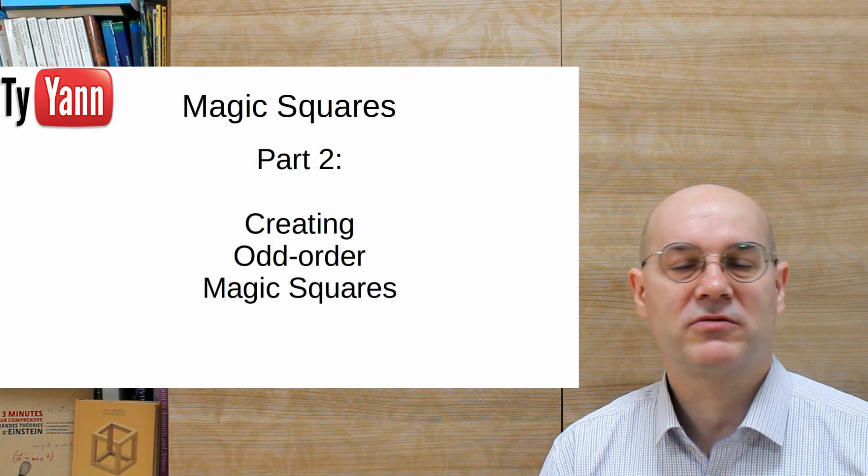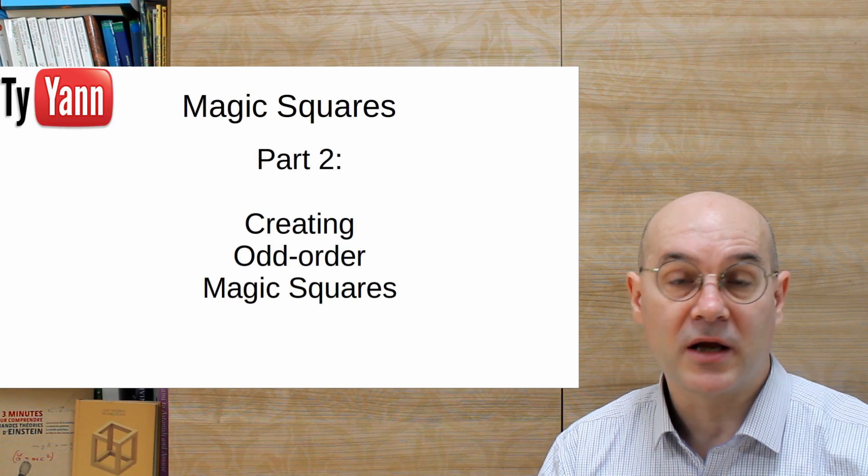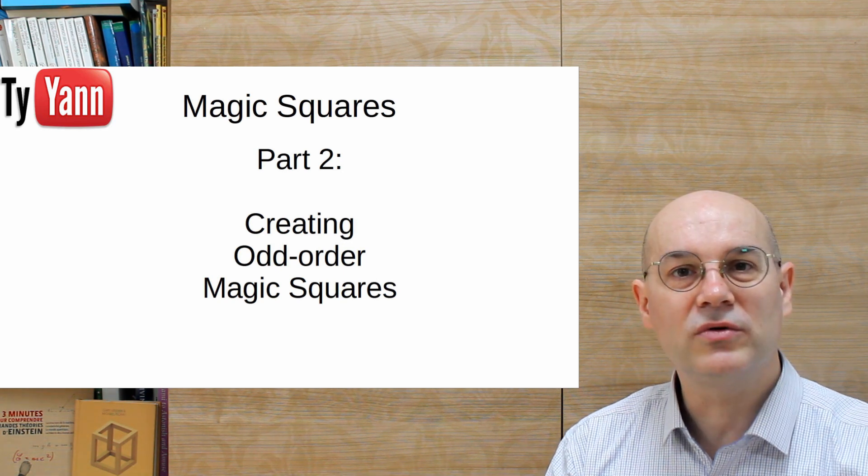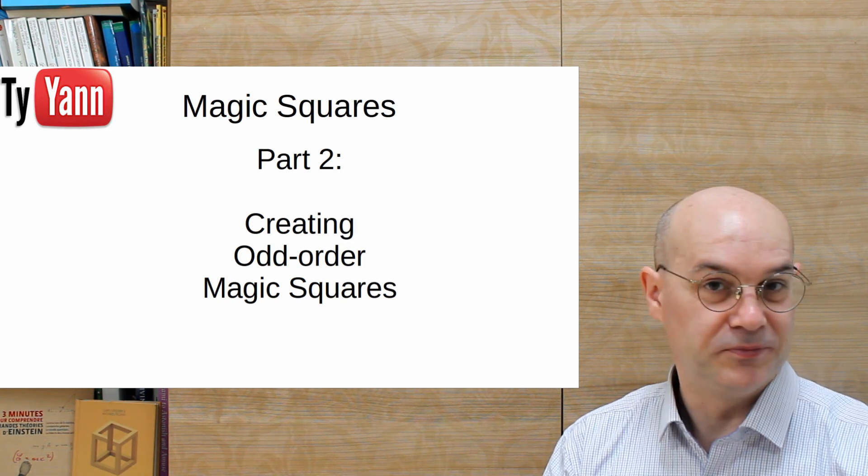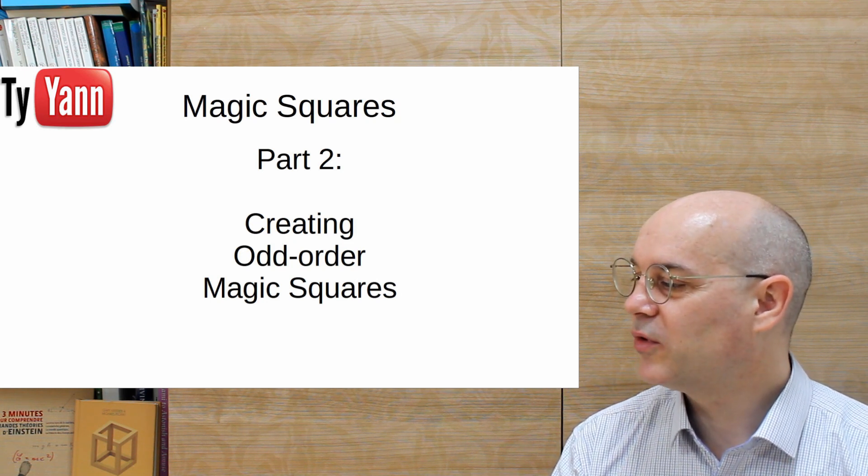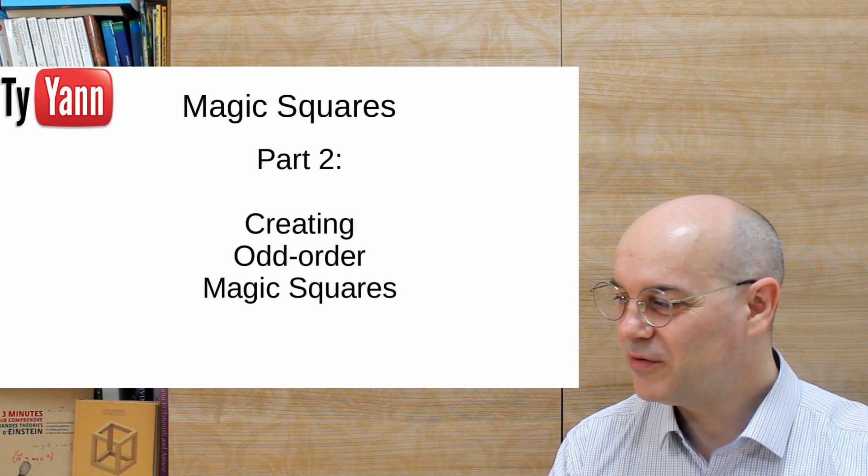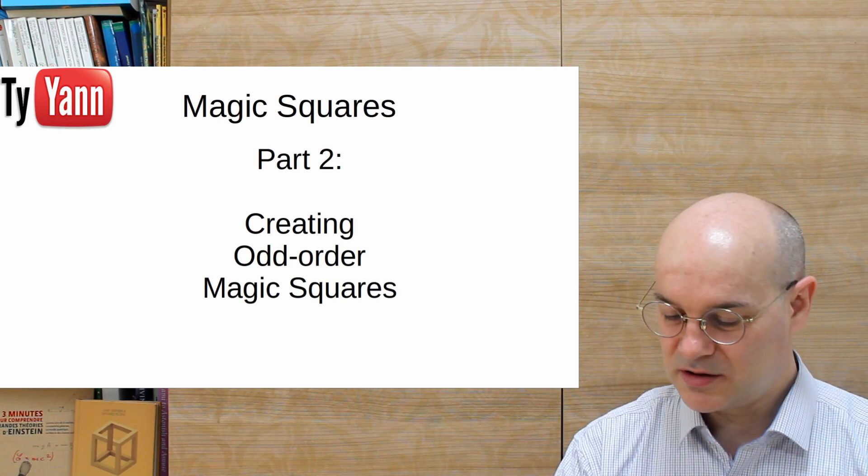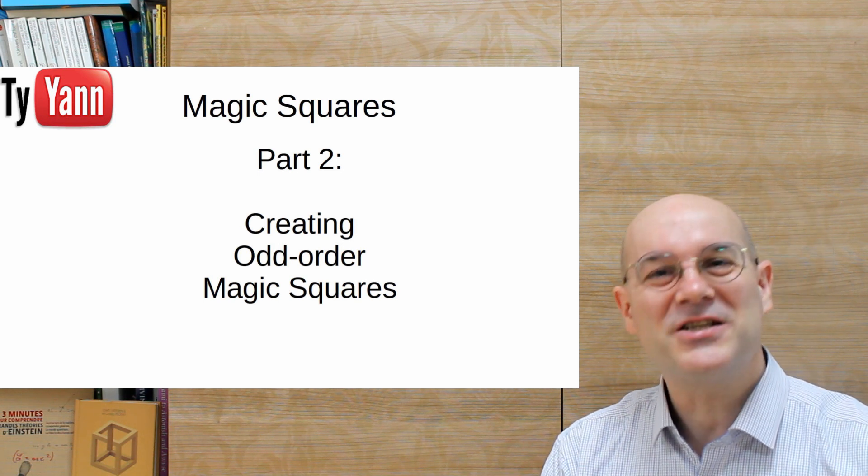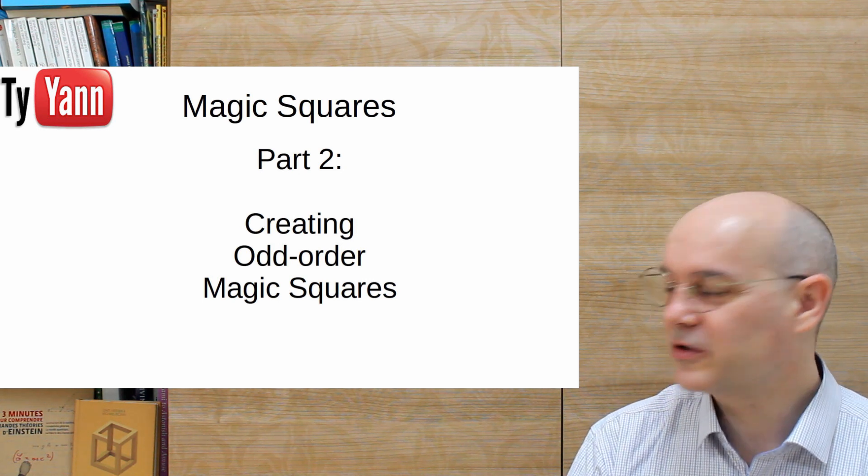What is an odd order magic square? Well, it's very easy. It means that the number of cells on the side is an odd number like 3x3, 5x5, 7x7, etc. We're going to go to even order magic squares in next videos. But for today, we're going to work with odd order magic squares and see very nice magic squares that have some special properties. Maybe you can use them as a magic trick.